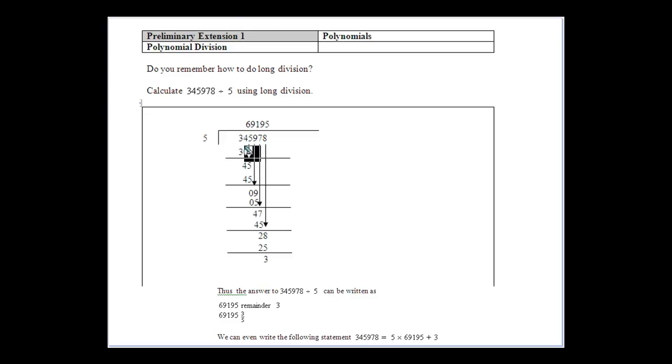So basically 5 goes into 34 six times, so we write down our 30 because 5 times 6 is 30. Our remainder then was the 4, so 4 tens then. We treat it as 4 tens and then bring the 5 down. So 5 goes into 45, well it goes in 9 times and that's 45, so there was no remainder there.